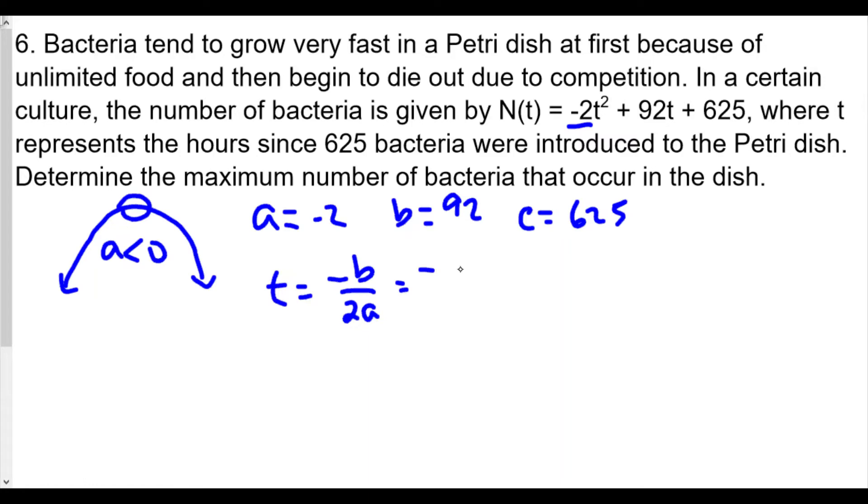The maximum occurs at t equals negative b over 2a. We plug in our b value of 92 and our a value of negative 2. We're going to get negative 92 divided by negative 4, which is a positive value. Now we're going to take 92 divided by 4 and get 23.